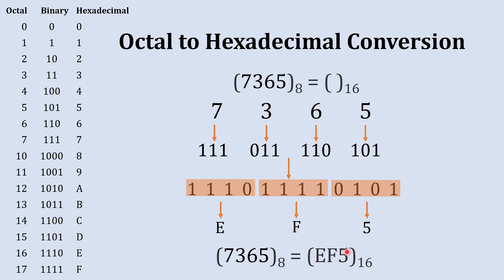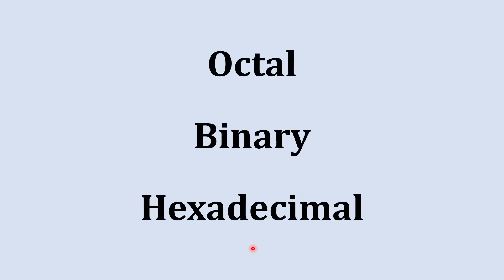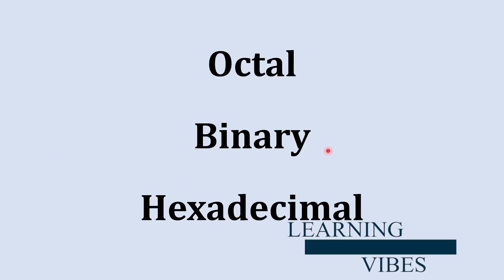Combining these, we get EF5 as the hexadecimal equivalent to the octal number 7365. So remember: octal to hexadecimal conversion is just a two-step process — first convert the octal number into binary, and then convert that binary number into hexadecimal.